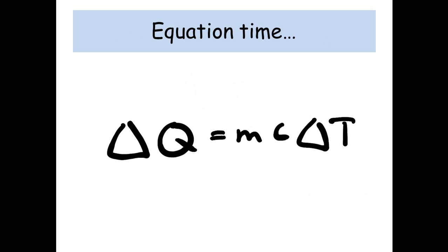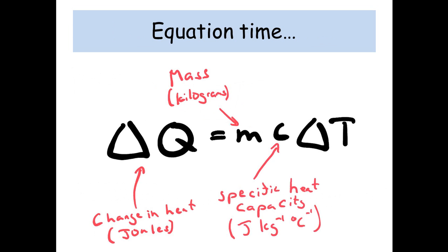And then we need to look at our equation for specific heat capacity. So our ΔQ, that's the change in heat which is in joules, is equal to the mass in kilograms times the specific heat capacity, which is joules per kilogram per degree, times the change in the temperature, which is in degrees centigrade or it can be in Kelvin.